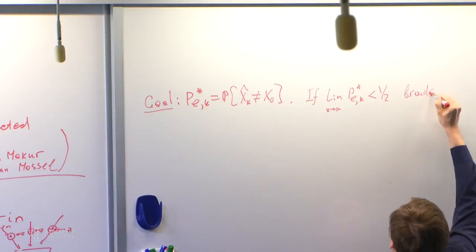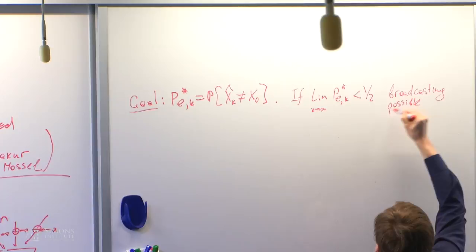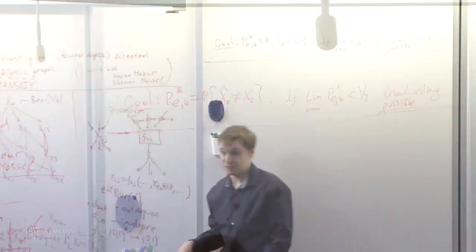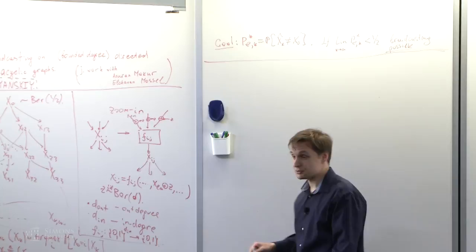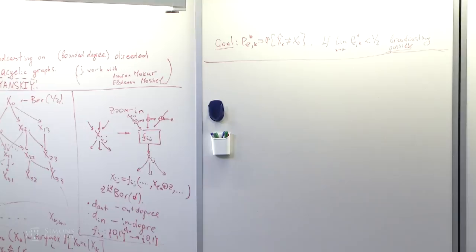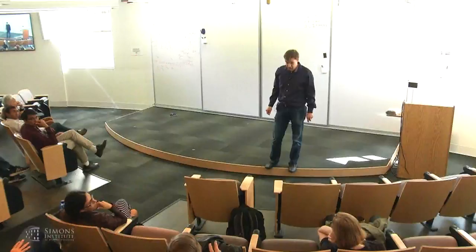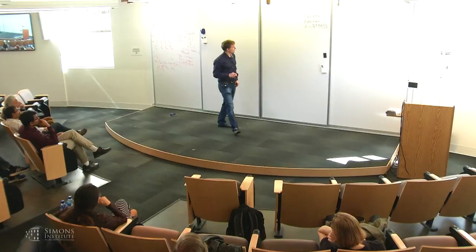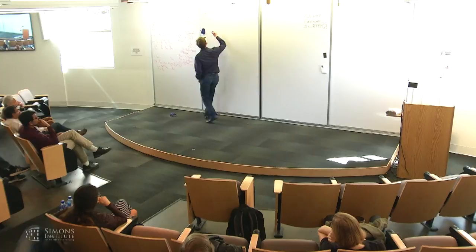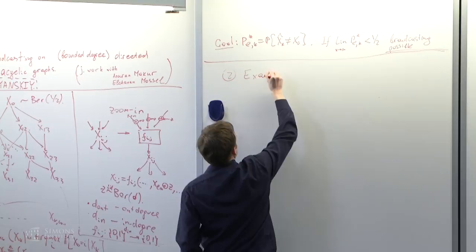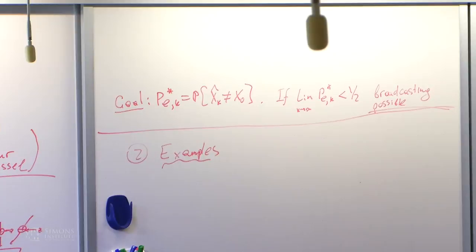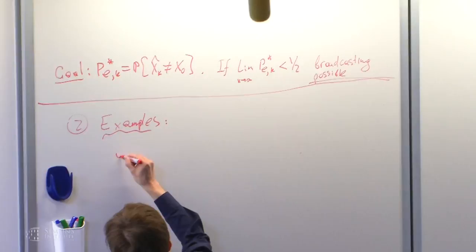The question is for what grids, for what graphs and processing functions is recovery possible? There are two design parameters: the graph and the processing functions. The goal is to come up with such graphs and functions that recovery is possible with probability of error slightly better than half.